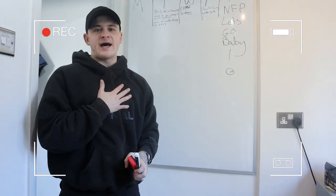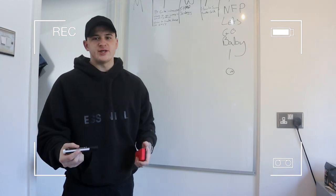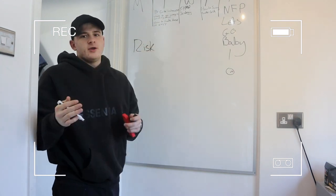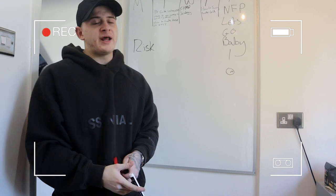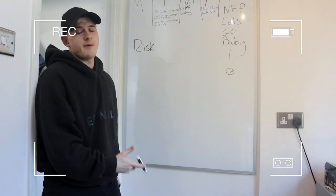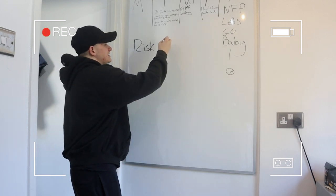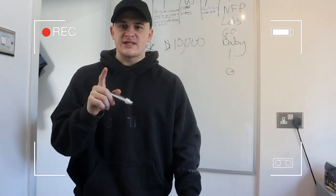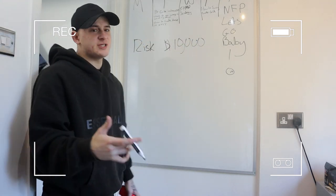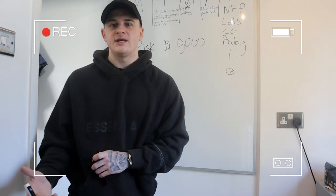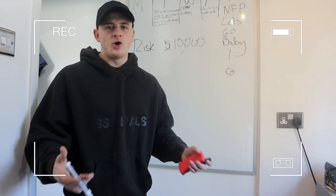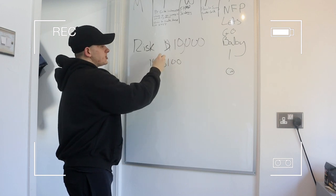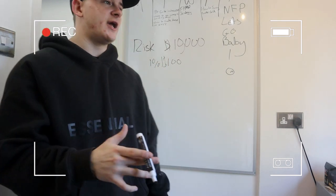The first thing we need to analyze is risk management. You need to be using an online app or an app store calculator to calculate your lot size. On a $10,000 account, you want to use one percent risk — one percent of $10,000 is $100. So you're risking $100 per trade. That is the maximum you want to risk.